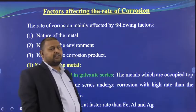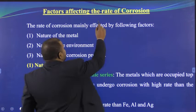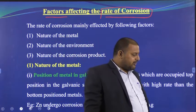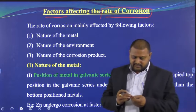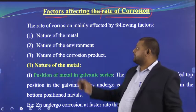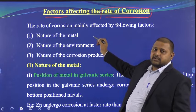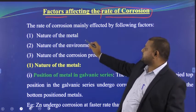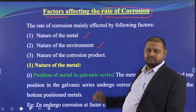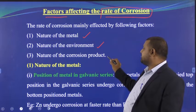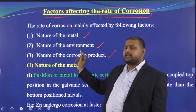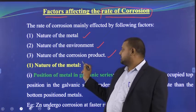The rate of corrosion depends upon three important factors: first, the nature of the metal; second, the nature of the environment; and third, the nature of the corrosion product. We will now examine each of these in turn, beginning with the nature of the metal.